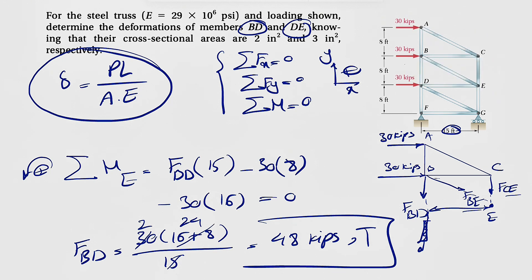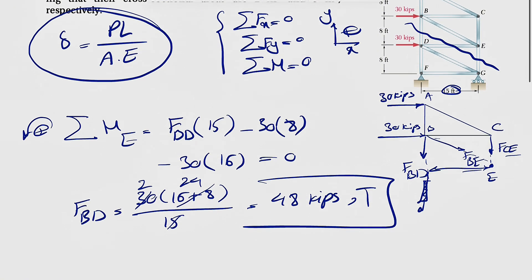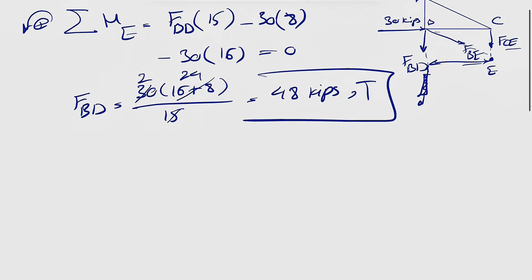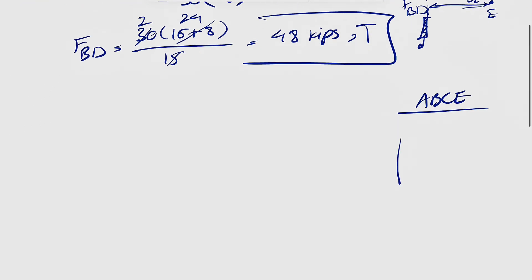For member DE, we're going to use a different section. And the section that we're going to do is this section. And we're going to consider the top part. So it would be the free body diagram of A, B, C, E.